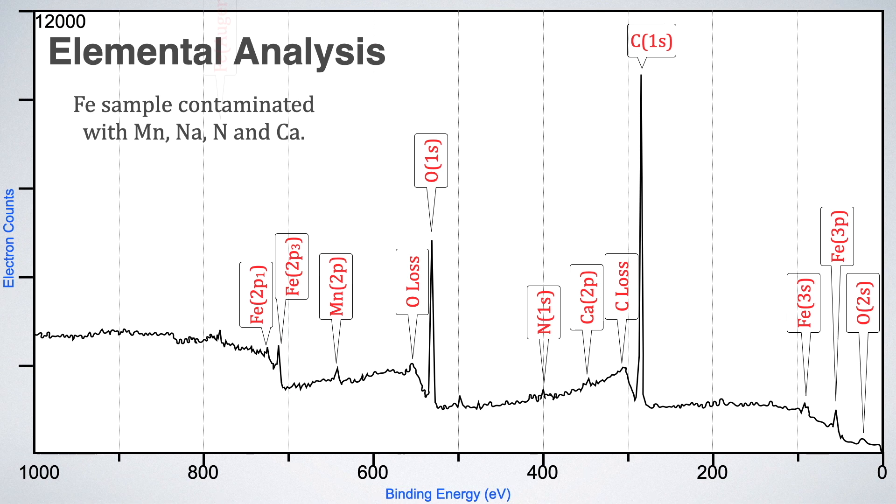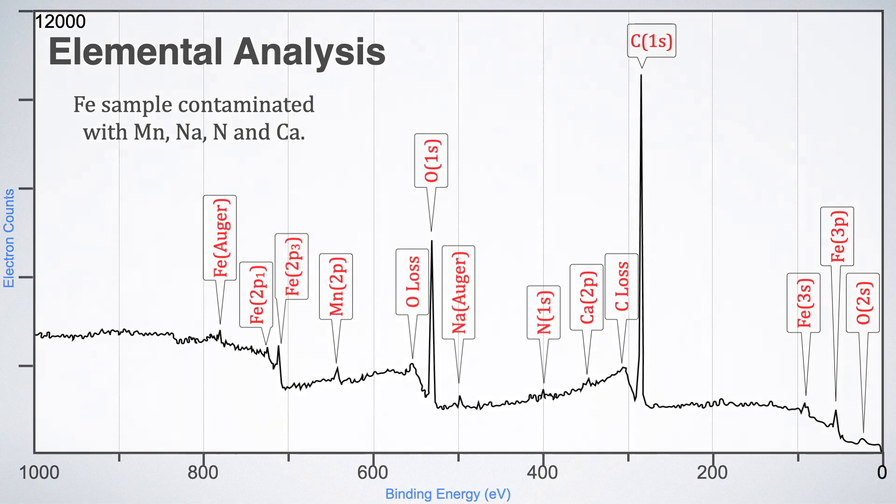Also, some small peaks at 781 electron volt and 498 electron volt represents Auger peaks. Auger lines are appearing because of energy transfer from one electron to the other electrons during photoemission process. This also we will discuss in detail in next videos. For now, we can easily find the number of elements present in our sample just by matching the binding energy of different peaks with the standard values as given in the table.